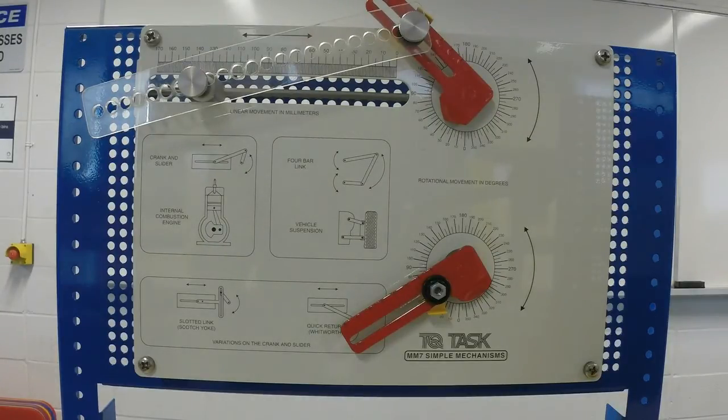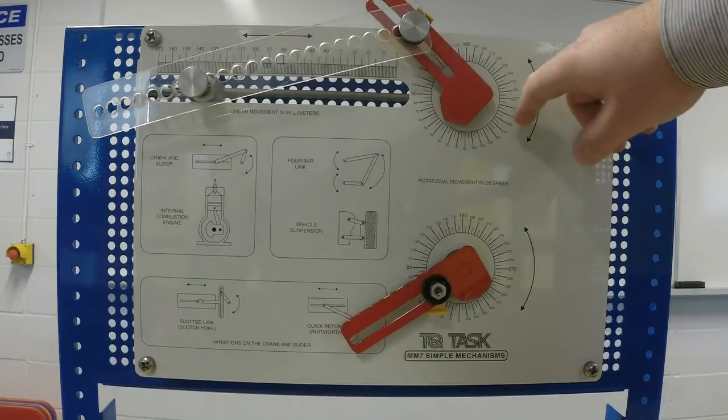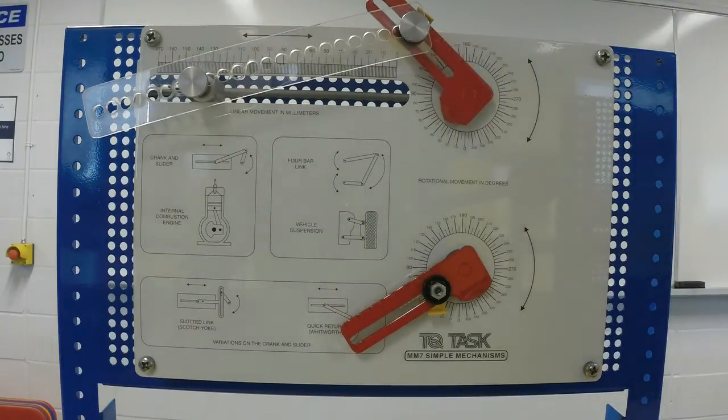Measurement of rotations and movements can be made using printed scales on the back plate. So these are, as you see, the rotational angles, and these are the linear grid.